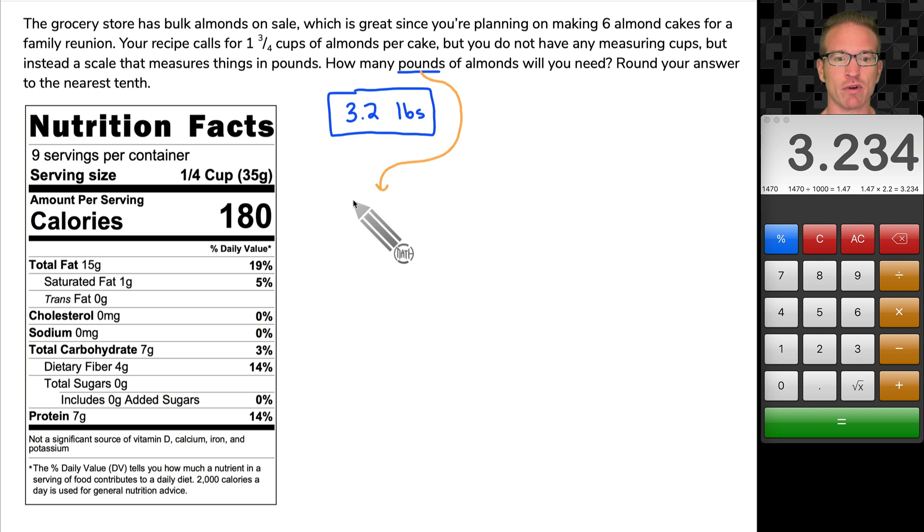it revolves around, first of all, understanding what our goal is. And our goal is pounds. So in my dimensional analysis, I'm going to put pounds at the top of my first fraction, because that's my goal. I'm trying to figure out pounds.